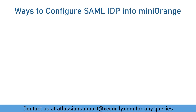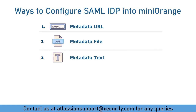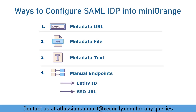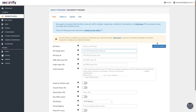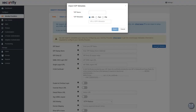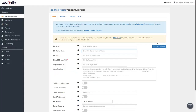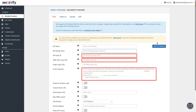Now let's see which methods Minirange supports for configuring a SAML Identity Provider into Minirange. Metadata URL specifies the URL of the SAML Identity Provider where metadata can be obtained. Metadata XML file and metadata text contain the information necessary for configuring SAML SSO with the identity provider. We can also set up metadata endpoints manually, containing Entity ID, SSO URL, and X509 certificate — you will get these details from your SAML Identity Provider. If your IDP provides metadata via URL, XML file, or text, click on Import IDP Metadata in the SAML section, where you can enter the metadata URL, text, or upload a metadata file.